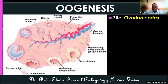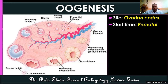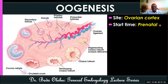Oogenesis takes place within the ovarian cortex. The outer zone of the ovary is the ovarian cortex, and the central zone is the ovarian medulla. Oogenesis takes place within the ovarian cortex where we see follicles at different stages of maturation. Like spermatogenesis, mitotic and meiotic division to form the oocyte begin before the girl child is born — in contrast, spermatogenesis begins at puberty.